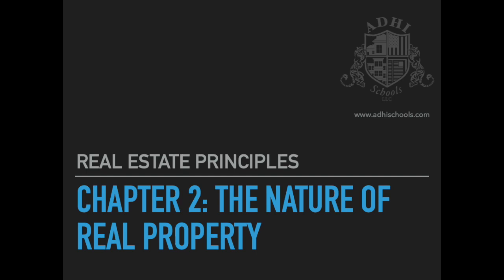Land must be adequately described, and an address is not a legal description for two reasons: A) many properties don't have addresses, and B) addresses can be ambiguous on long streets. For example, Pacific Coast Highway could have a 1601 PCH in La Jolla, Hermosa Beach, Carmel, and the Bay Area — all different properties with the same address.